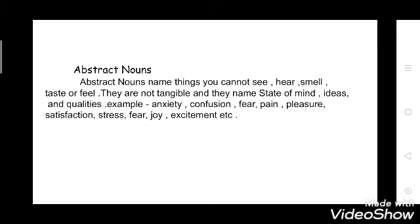Now moving to abstract nouns. Abstract nouns name things you cannot see, hear, smell, taste, or feel. They are not tangible. They name states of mind, ideas, and qualities. Examples: anxiety, confusion, fear, pain, pleasure, satisfaction, stress, joy, excitement, etc. — they are all abstract nouns. Abstract nouns have no physical form — they don't have any physical form.